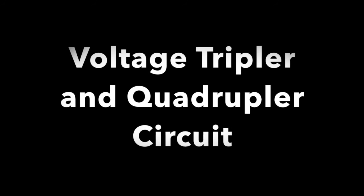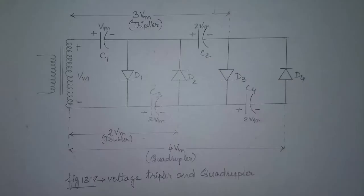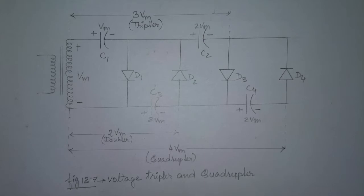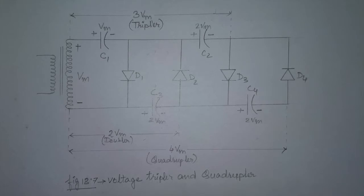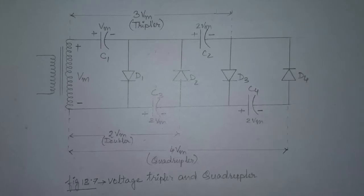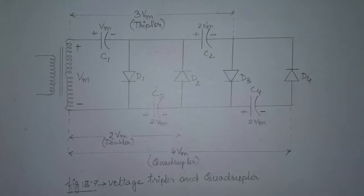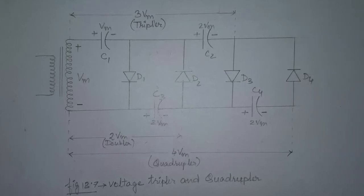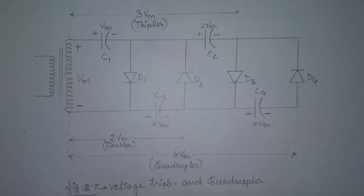Now, we will see the voltage tripler and quadrupler circuit. It is an extension of the half wave voltage doubler which develops 3 and 4 times the output voltage in comparison to that of the peak input voltage. It is obvious that a diode and a capacitor may be connected so that the output voltage becomes 5, 6, 7 times, and so on.